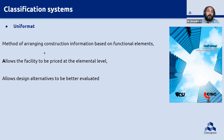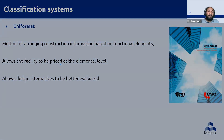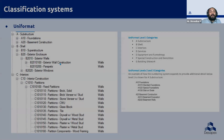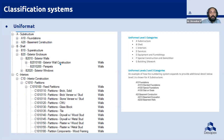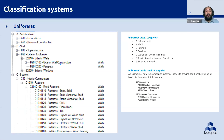UniFormat divides construction information based on functional elements of the project — allowing the facility to be priced at the elemental level. Categories include substructure, shell, interiors, service equipment, and so on. Drilling further down reveals different activities and elements within those categories. These individual elements can be coded back to the model to help sort information properly when using it for quantity takeoffs.